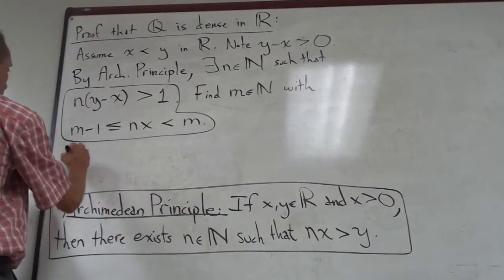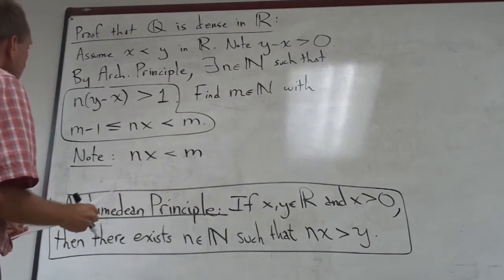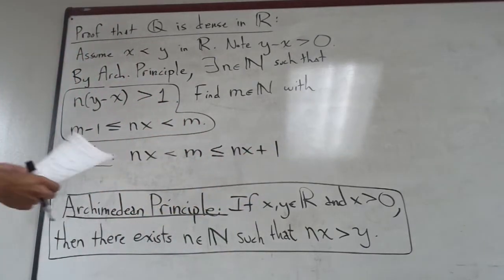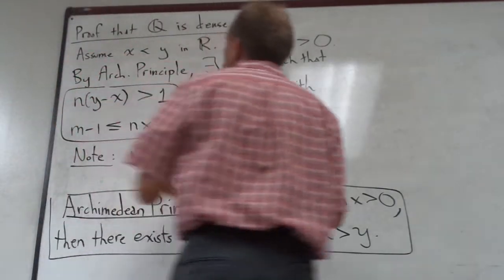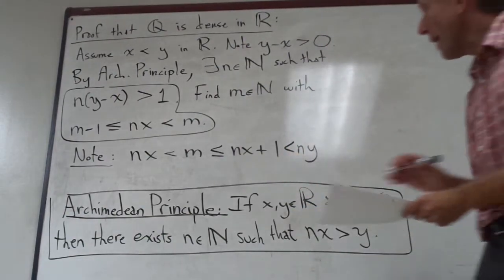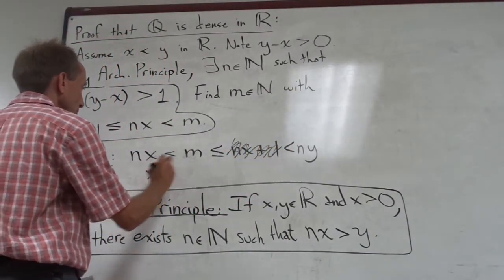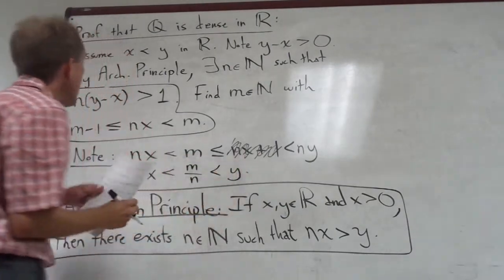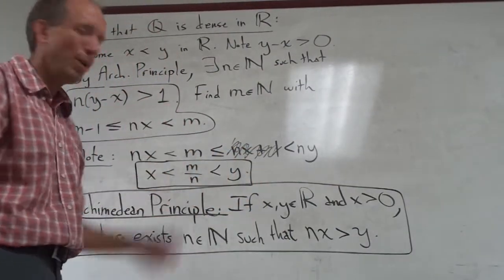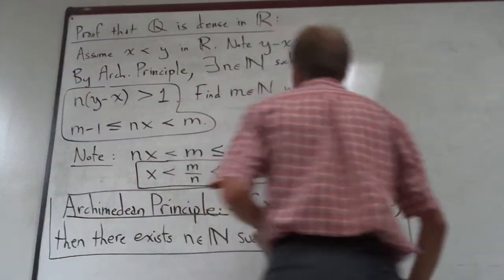I'm going to put these two results together to create a rational number between x and y. Note that Nx is less than M, and M is less than or equal to Nx plus 1. From the top inequality, Nx plus 1 is actually less than Ny. So ignoring the middle term and dividing through by N everywhere — which we can do since N is a natural number and not zero — we have a rational number M over N between x and y. That is how it works to show that Q is dense in R.